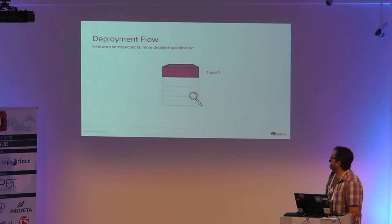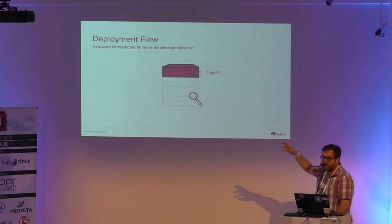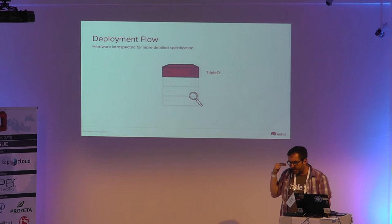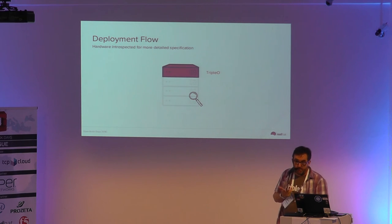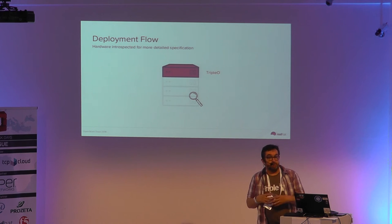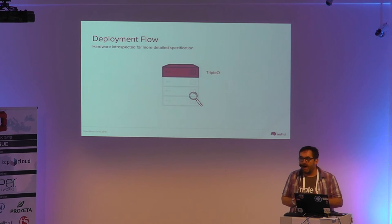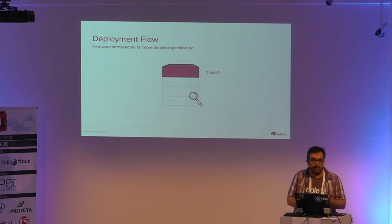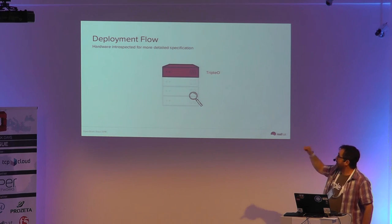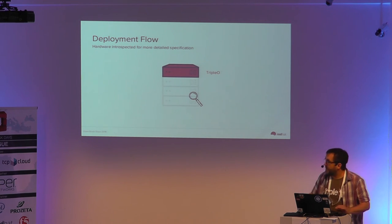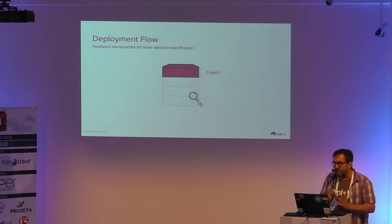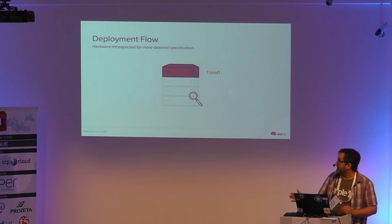Once the hardware has been registered, TripleO is able to inspect it. What happens during inspection is the machines are power-cycled via IPMI so that they reboot into a RAM disk, which boots on each machine, runs a whole lot of benchmarking tests, and gathers fundamental information like number of cores, amount of RAM, number of disks, disk size and so on. All of that information is posted into a service called Ironic Inspector, which gives TripleO all the information it needs about what hardware exists and what attributes it has.